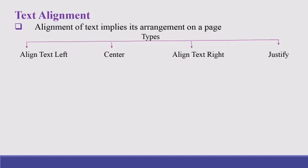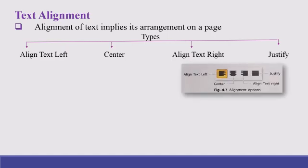Text alignment are of four types: align text left, center, align text right, and justify. Align text left aligns the selected text to the left edge of the page. Center aligns the selected text to the center of the page. Align text right aligns the selected text to the right edge of the page. Whereas justify aligns the text to both the left and right edge of the page.